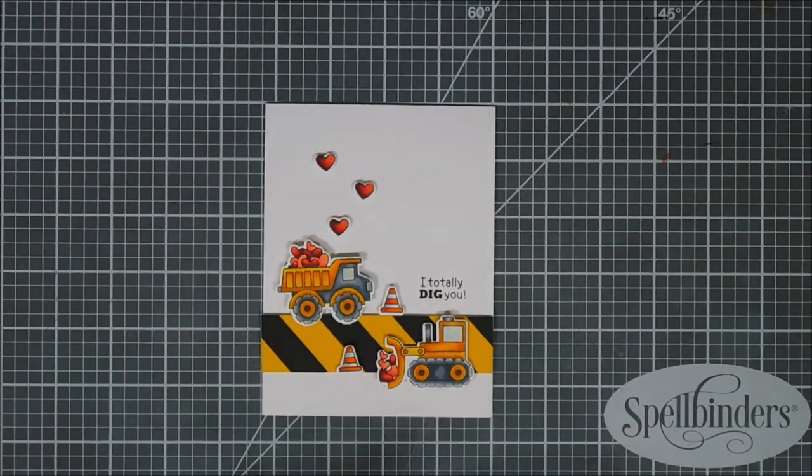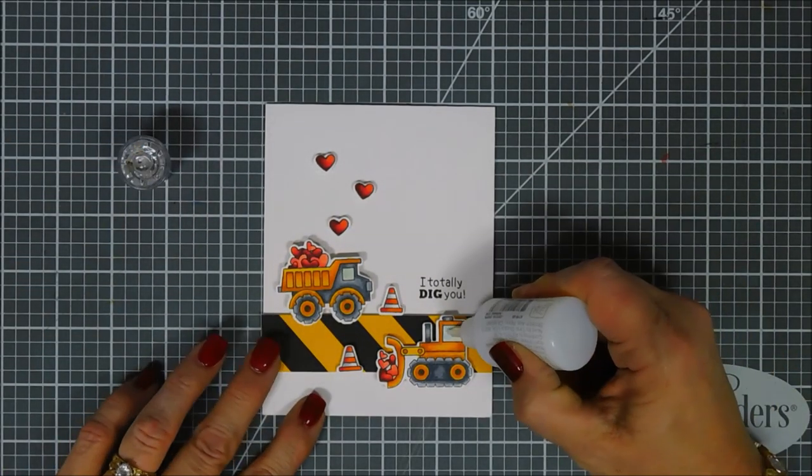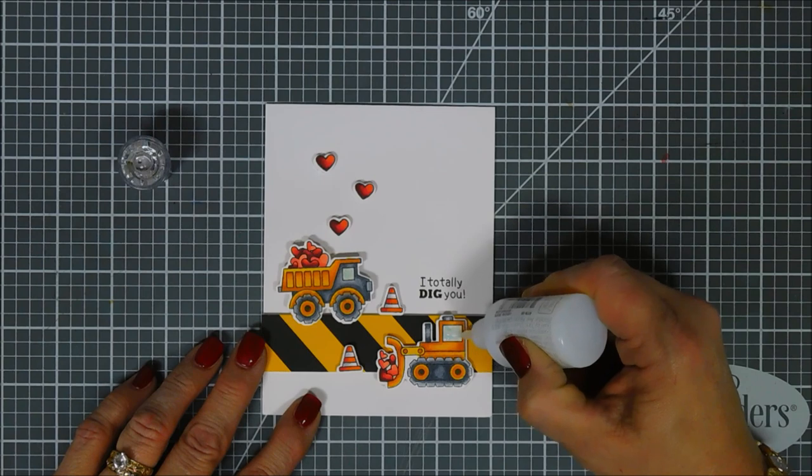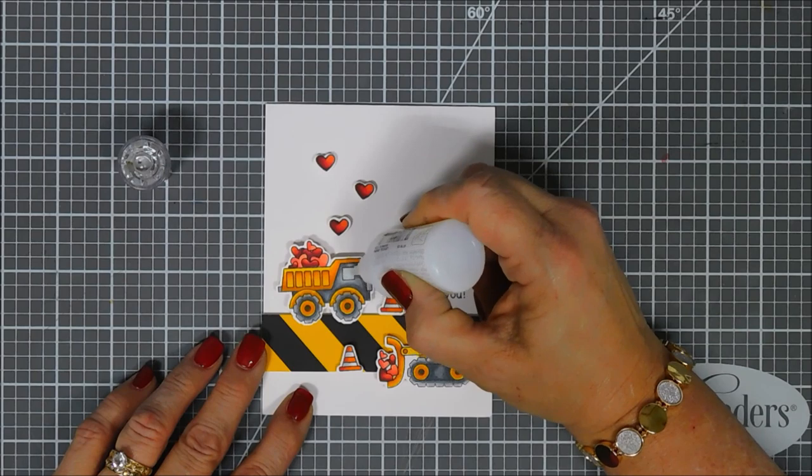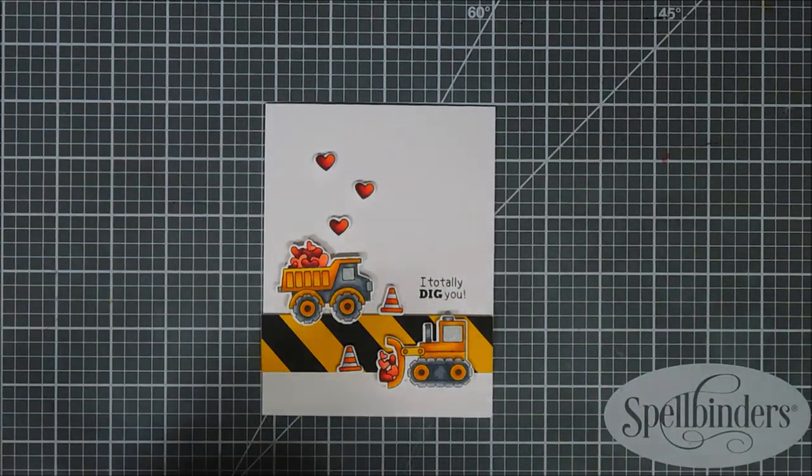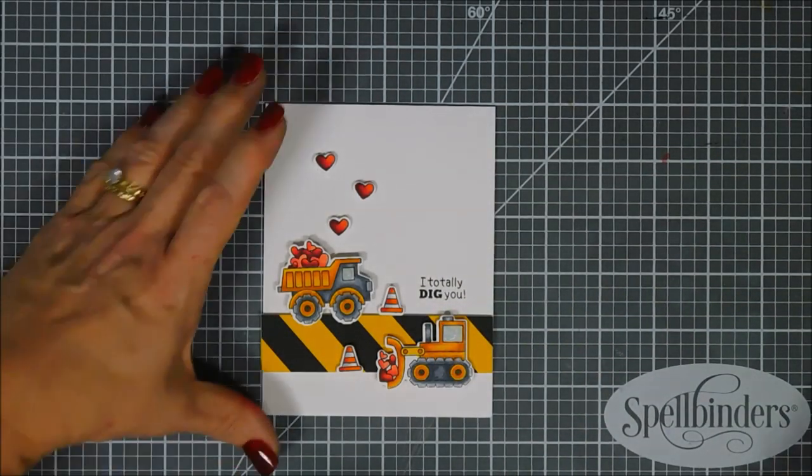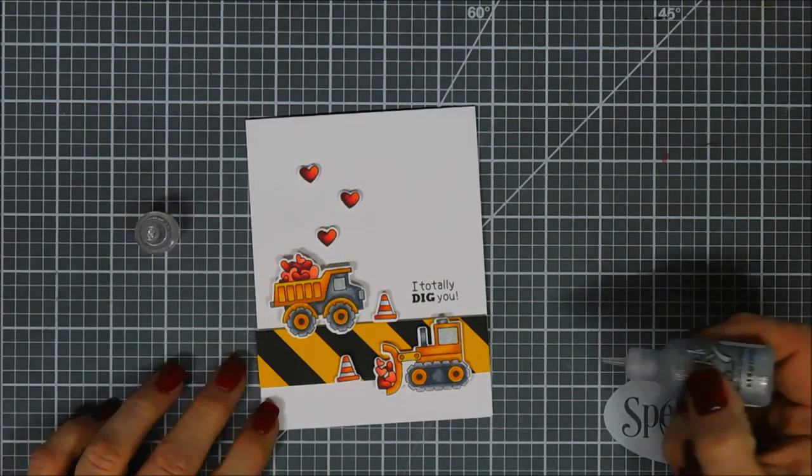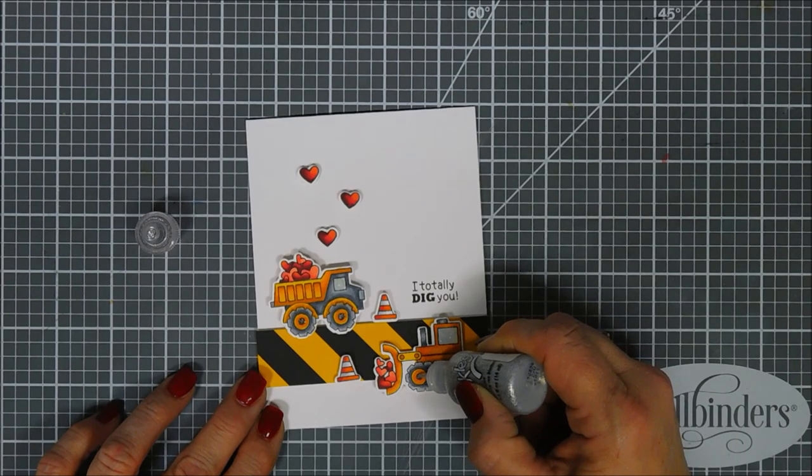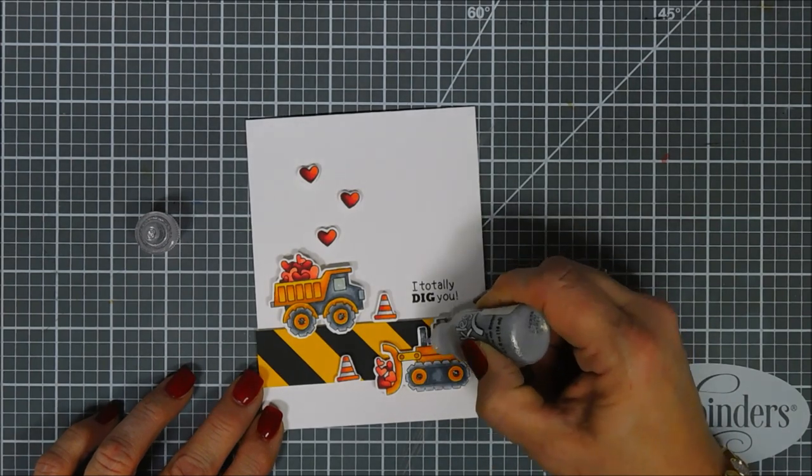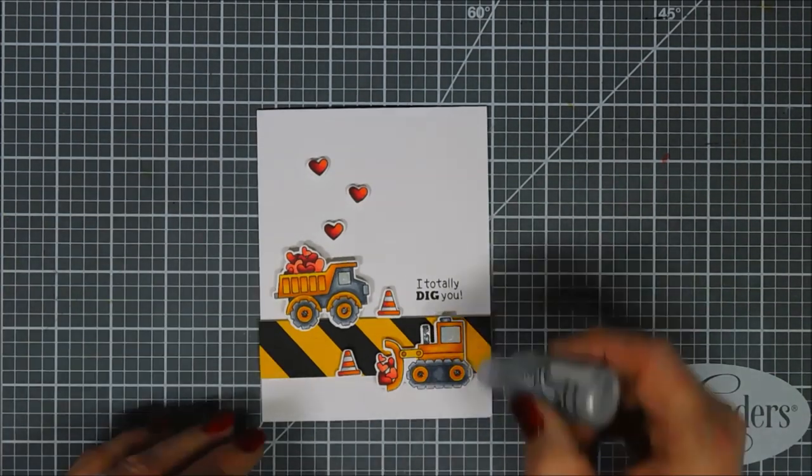Okay, all we have left is add some bells and whistles. I'm using some morning dew drops - these are going to dry clear like a glossy accents. Then we're going to add some sparkle to the center of our tires with some silver glitter drops, and then I'm going to add some sparkle to each one of the hearts that are floating up and also the hearts that each one of the trucks are carrying with my teal aqua shimmer pen.